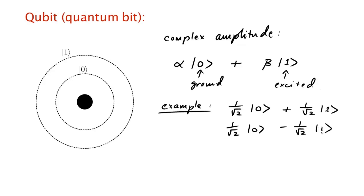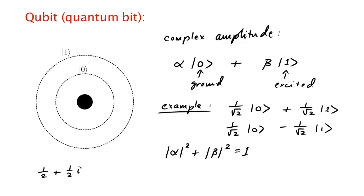Something is going on here. As I said, the amplitude is allowed to be complex. For example, you might have the state (1/2 + i/2)|0⟩ + (−1/√2)|1⟩. Is this state normalized? What's the square of the magnitude of alpha? Remember: if alpha equals a + bi where a and b are real, then the magnitude of alpha is √(a² + b²). In this case, |alpha|² would be (1/2)² + (1/2)² which equals 1/2. And of course, |beta|² is also 1/2, so it is a normalized state.